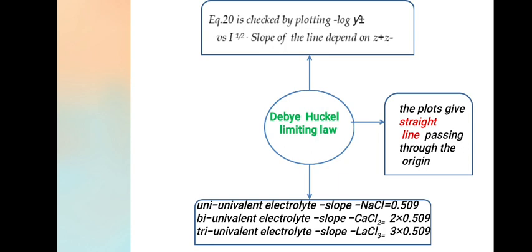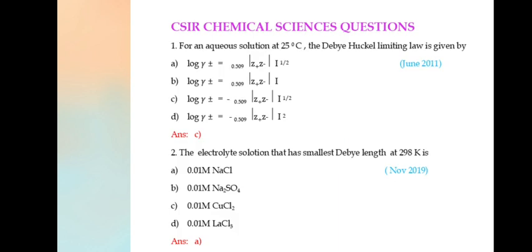For bivalent, the slope is 2×0.509. For trivalent, the slope is 3×0.509. I hope you all understood about this Debye-Hückel limiting law properly.